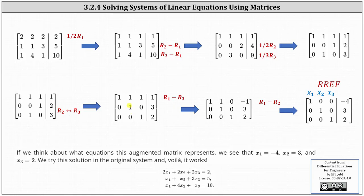Now we're very close. We need to get a zero in row one column two, as well as row one column three. Let's get a zero in row one column three by replacing row one with row one minus row three. Notice that by using row three, we don't lose the one in row one column one or the one in row one column two. Replacing row one with row one minus row three: 1 minus 0 is 1, 1 minus 0 is 1, 1 minus 1 is 0, and 1 minus 2 is negative 1.